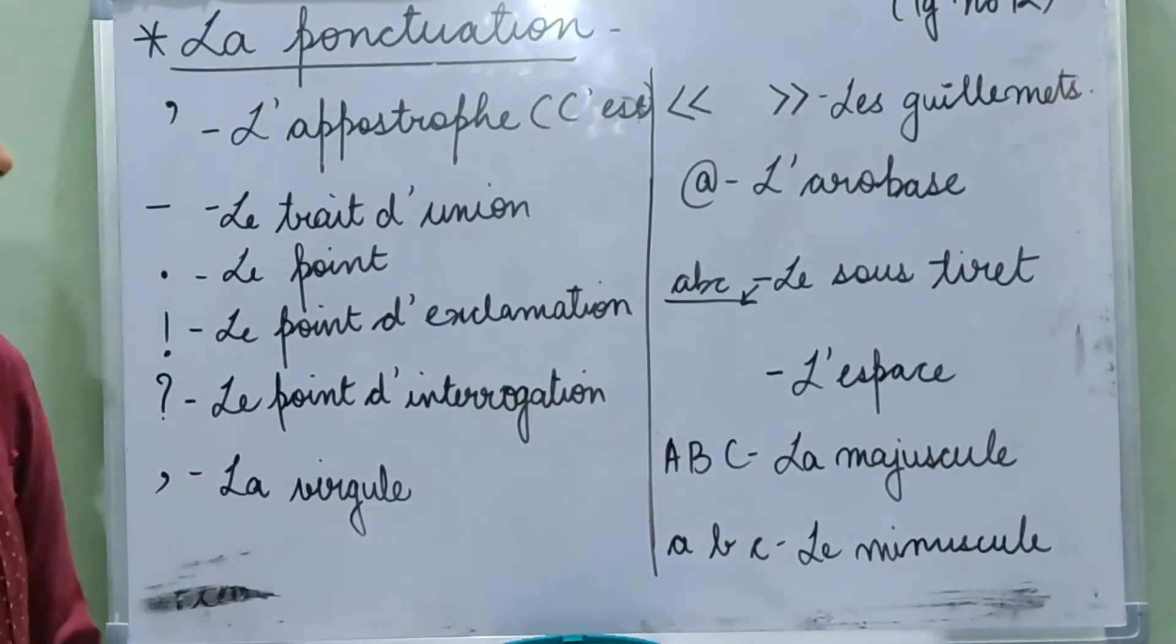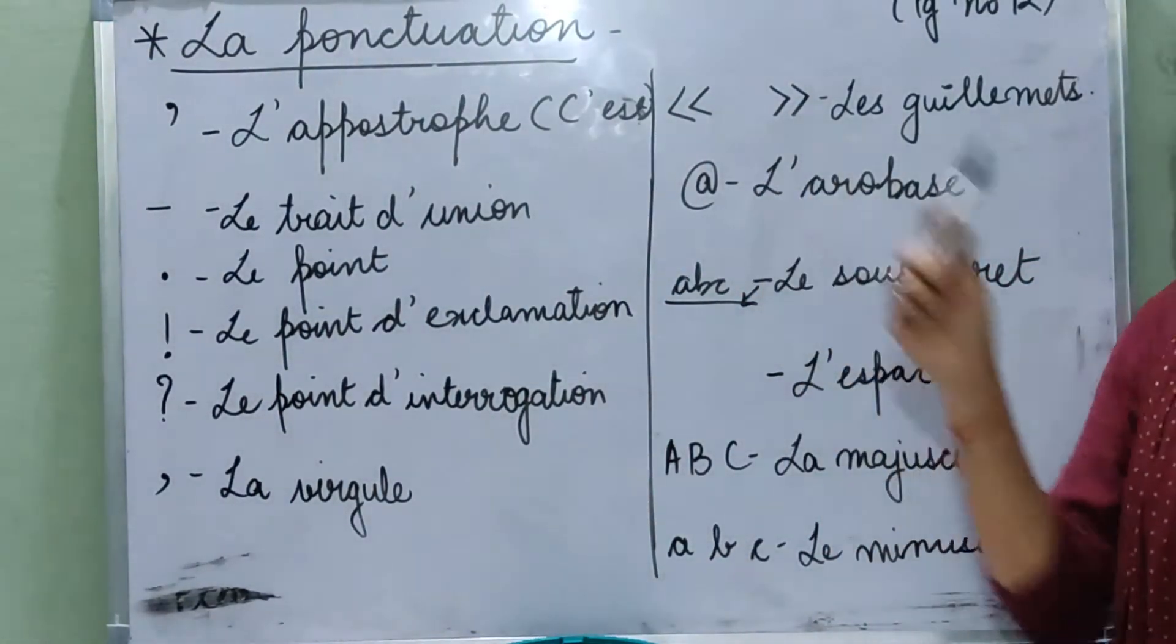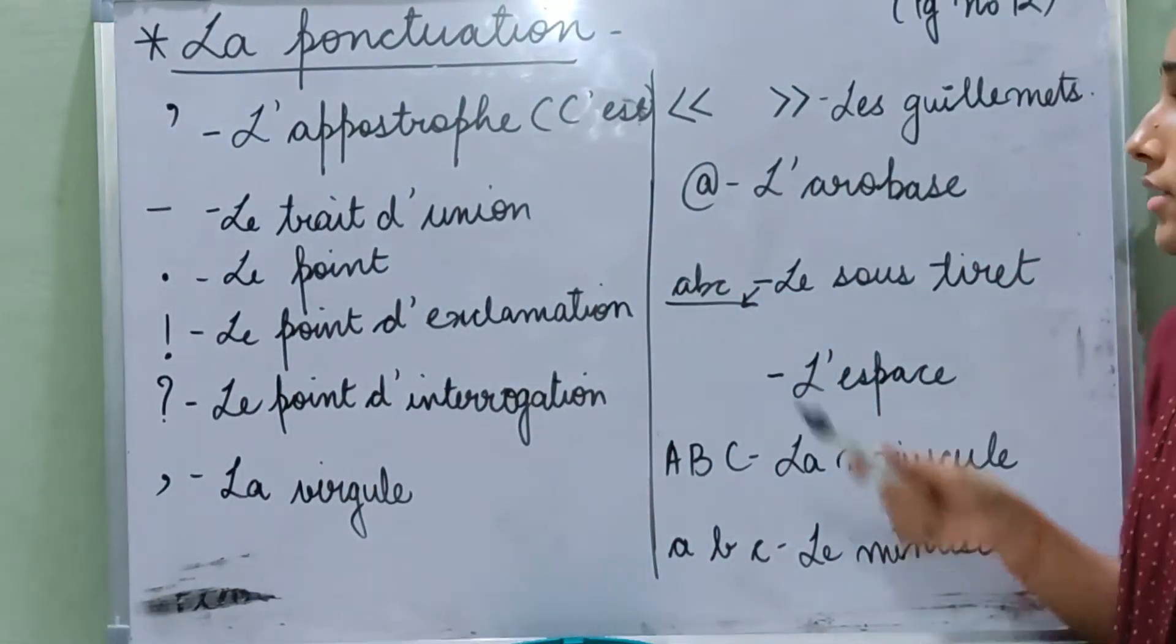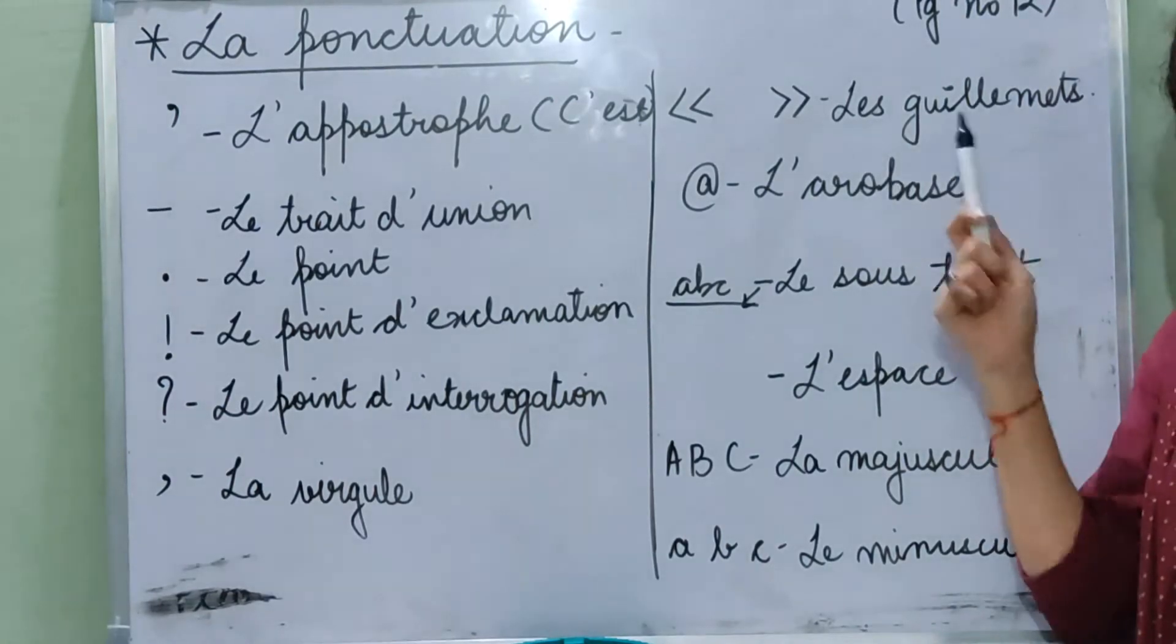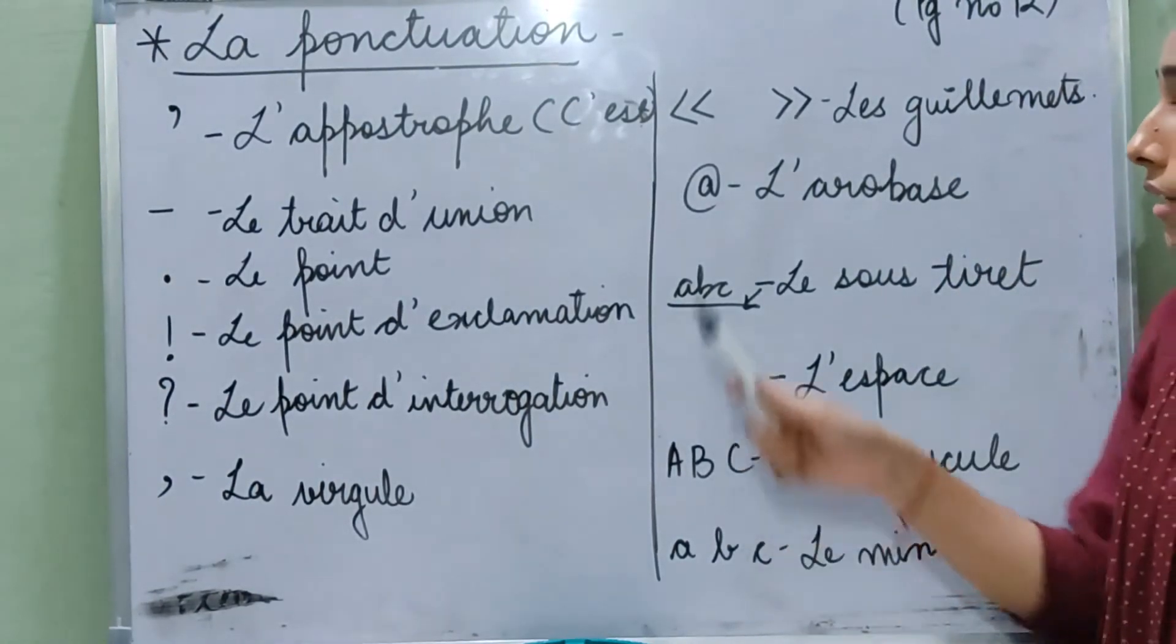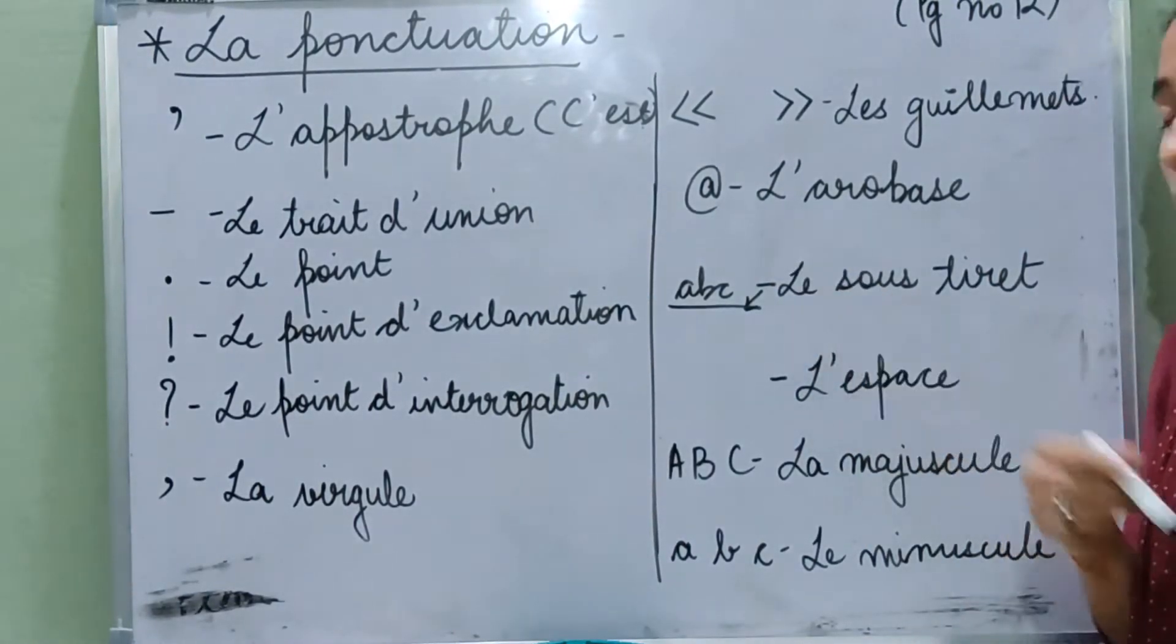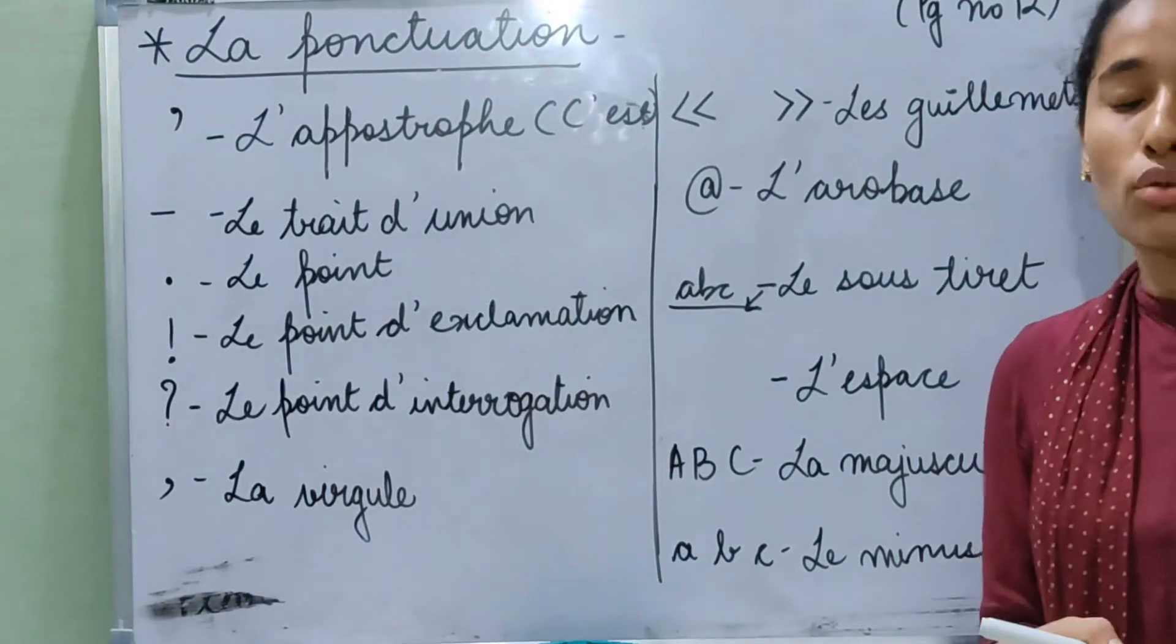Now we are going to learn about the quotation marks. Quotation marks are known as le guillemet. Le guillemet. Then the at-the-rate sign, it is known as arobase, l'arobase.